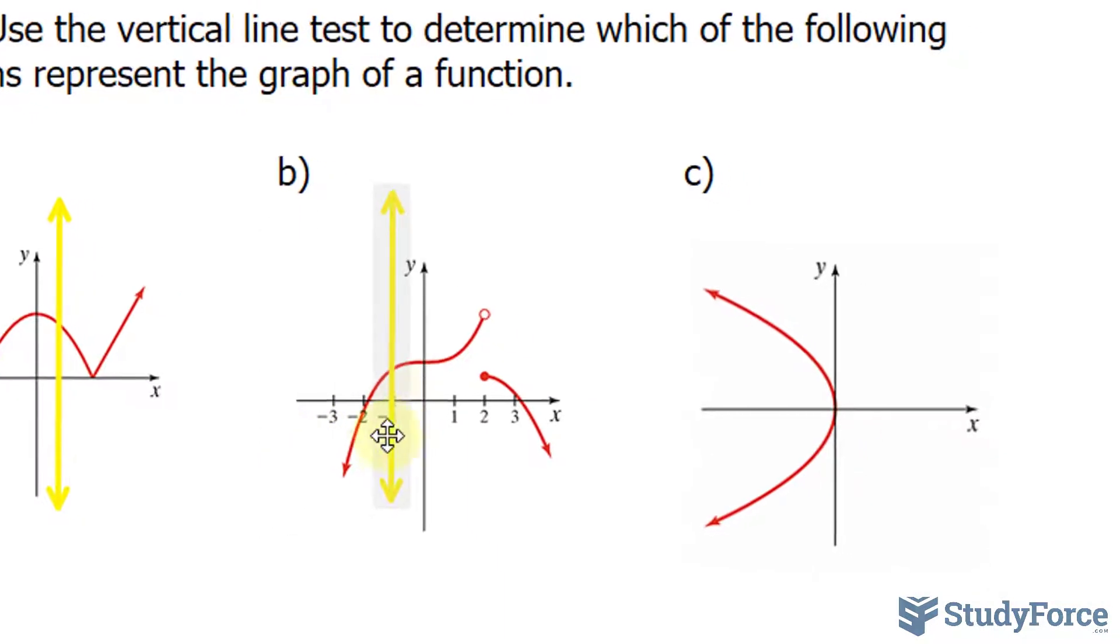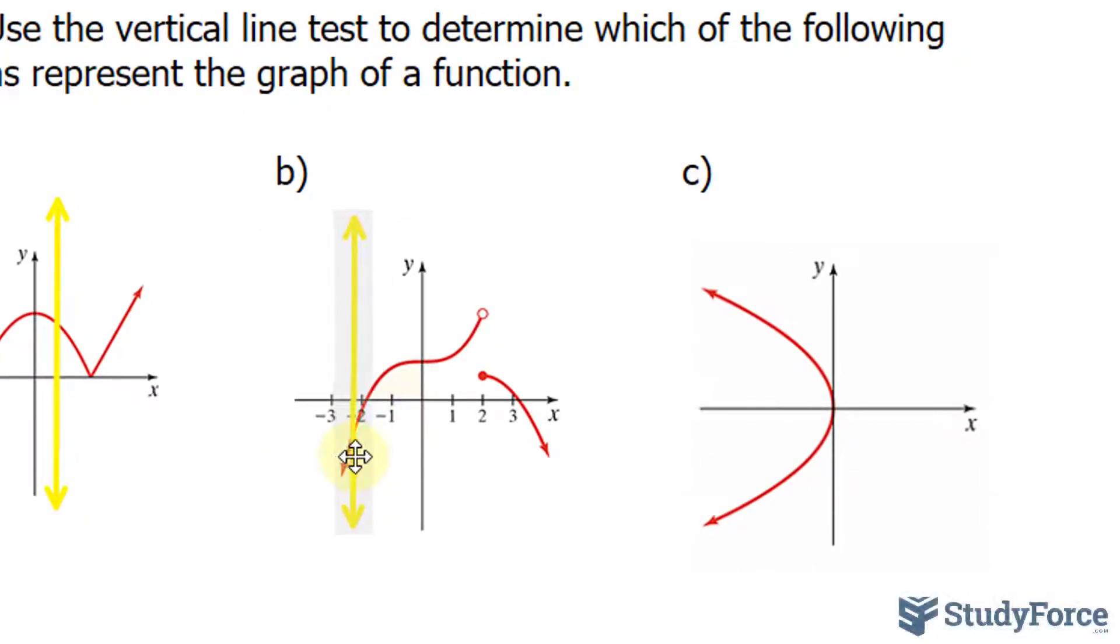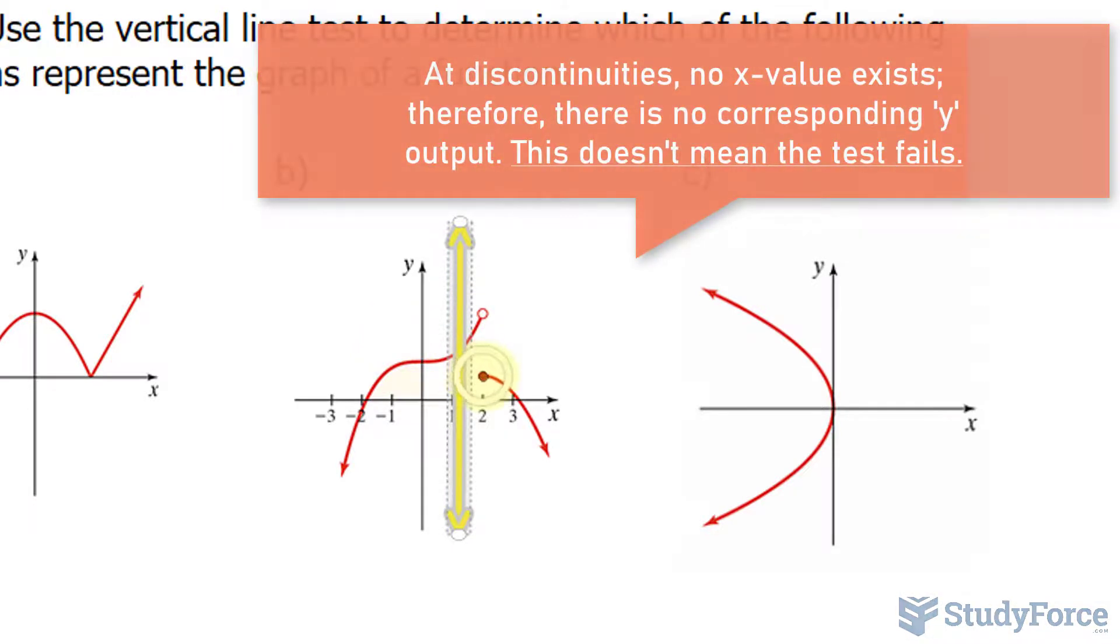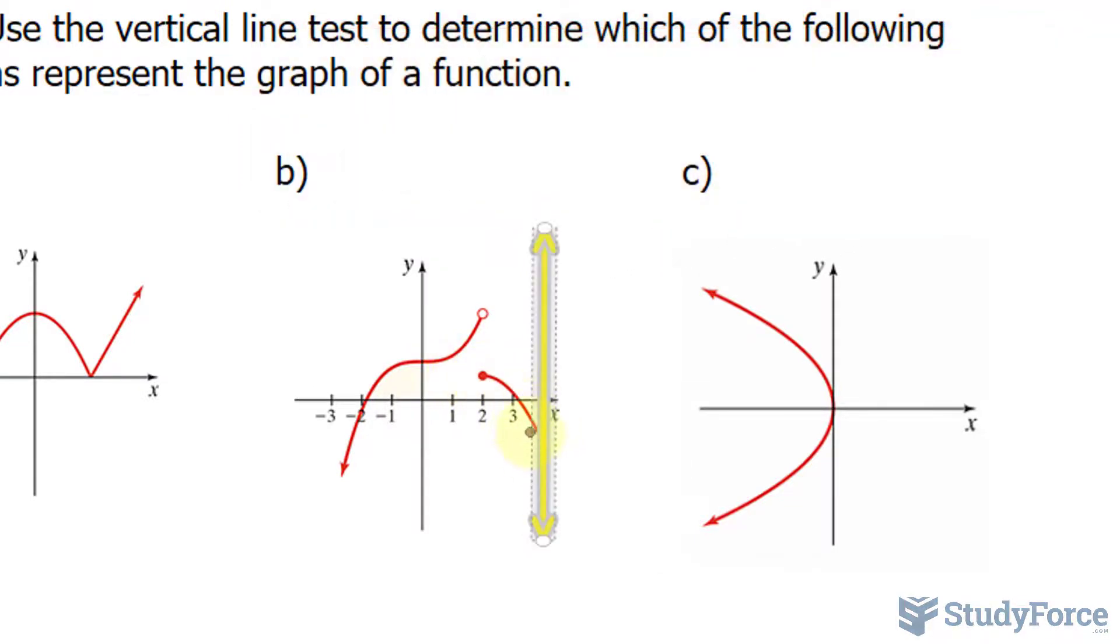What if I did it here? So starting over here, as I move along to the right, I have one y output all throughout. It's discontinuous right there, but that doesn't matter. Because over here, it continues on, and it has a y value. And the same goes with the rest of it.